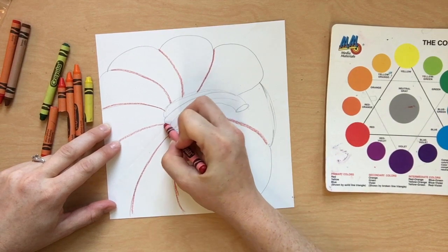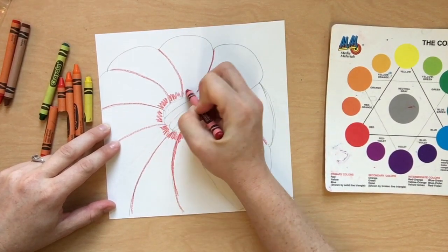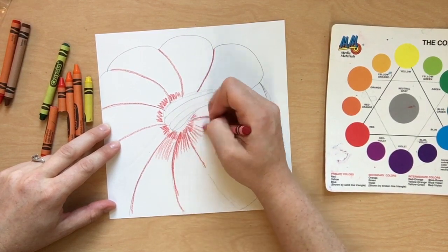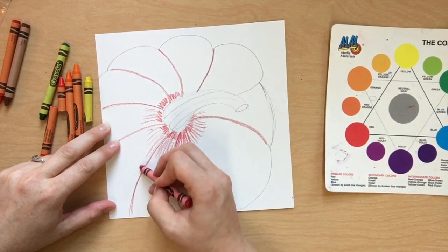And then, right next to the stem, we'll do some little squiggly lines. You can push hard in the creases, but use a little less pressure when you're doing the long strokes coming from the stem.